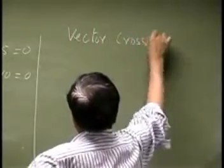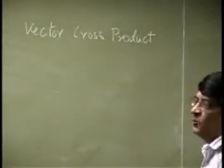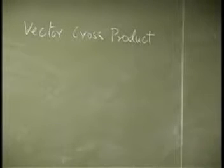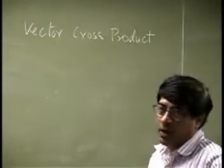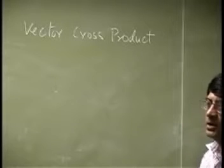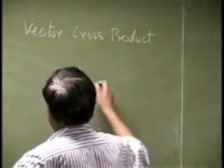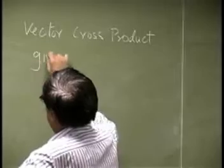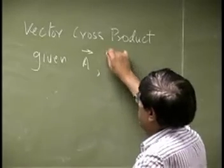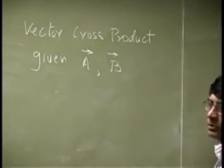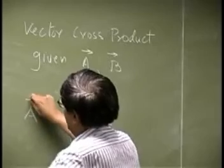Vector cross product — that's from vector algebra. We already defined the dot product which allows you to find components. Now we are going to find what we call the cross product, and that will allow you to find moments and couples. So let's say you are given some vector A and another vector B, and we will define a product: A cross B.